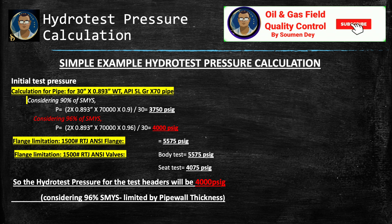We are deciding the initial hydro test pressure for a new pipeline. The first calculation considers 90% of SMYS. The test pressure = 2 × wall thickness (0.893 inch) × yield strength (70,000 psi for X70) × 0.9, divided by the pipe diameter (30 inch). The test pressure comes out as 3,750 psi. Considering 96% of SMYS with the same formula, it comes to 4,000 psig.